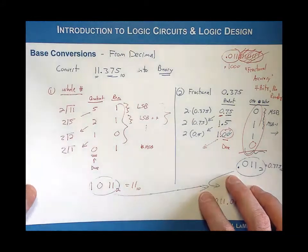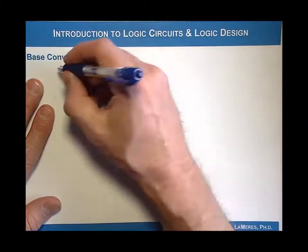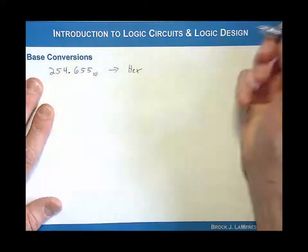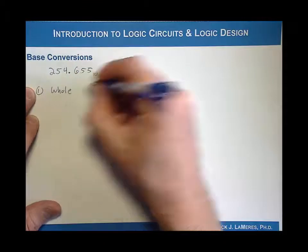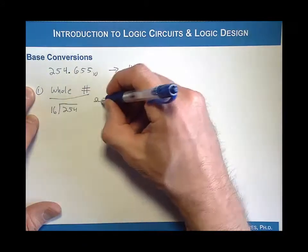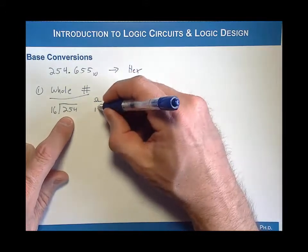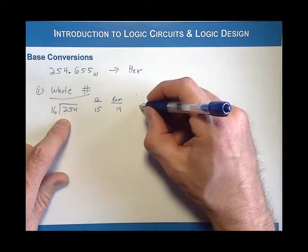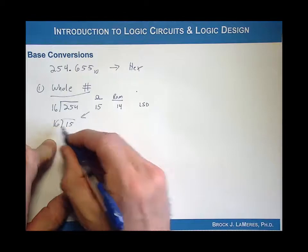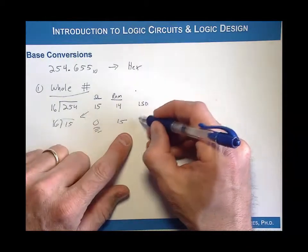Let's take an example of 254.655 base 10 and convert it into hex. Part one is the whole number: I take 254 and divide it by the base I'm going into, which is 16, and I record the quotient and the remainder. 16 goes into 254 fifteen times with a remainder of 14. I record this as the least significant digit — it's not a bit, it's a digit. Then I bring 15 down and divide by 16: it goes in zero times with a remainder of 15. I know I'm done, so I have my least significant and most significant digit.